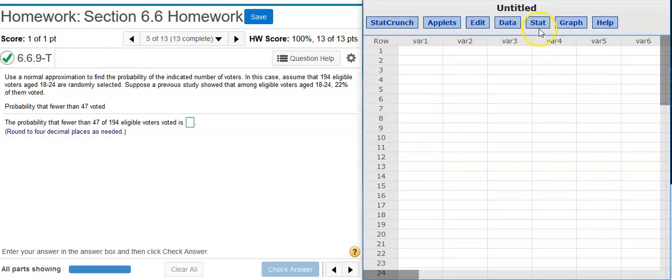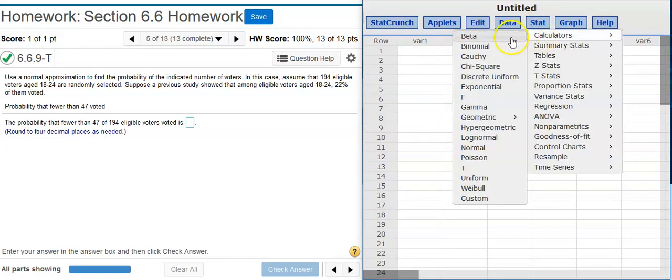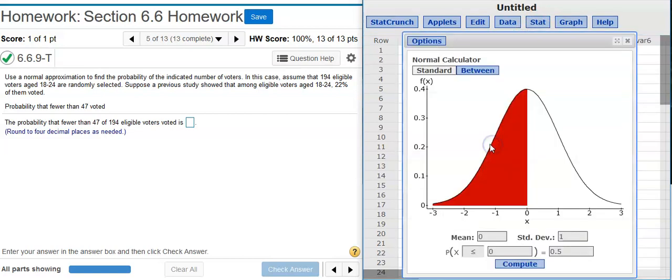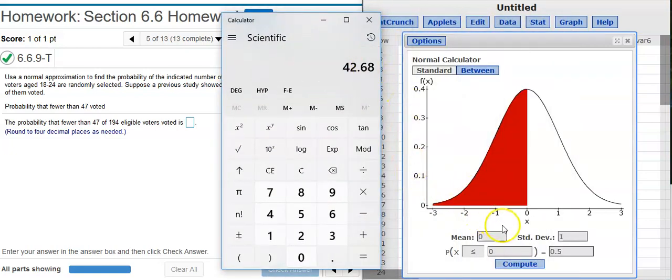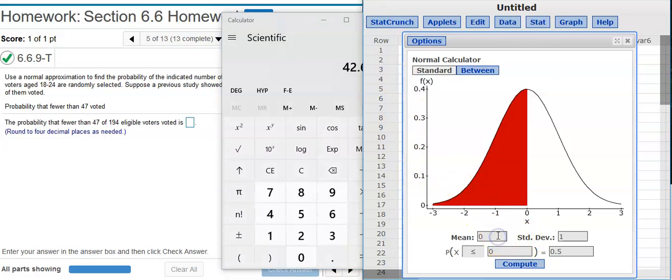Okay, now here in StatCrunch, we're going to go to Stat, Calculators, Normal. Here in my normal calculator, I'm going to put the mean value that I just calculated, which we can see here from the calculator display, 42.68.